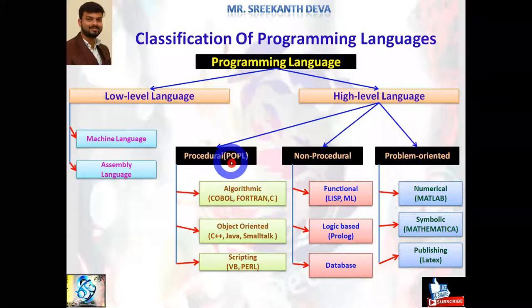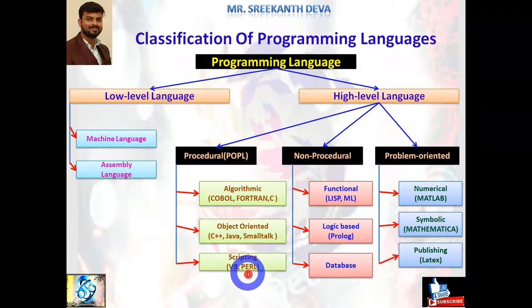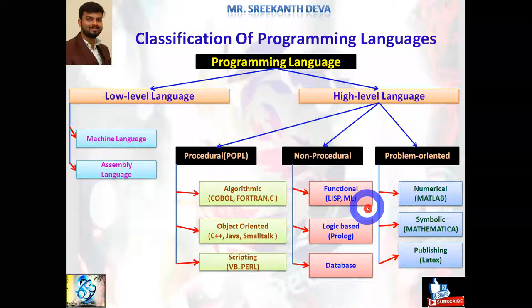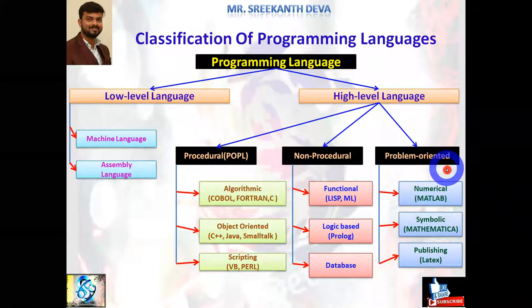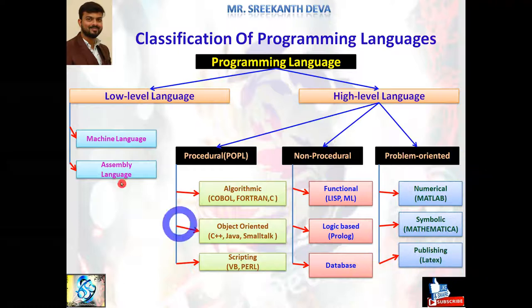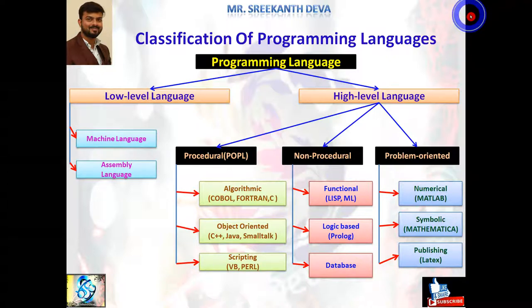Procedural oriented programming language is further categorized into algorithmic, object oriented, and scripting languages. Non-procedural languages include functional language, logic-based language, and database languages. Problem-oriented languages include numerical, symbolical, and publishing types. These are the various types of programming languages used in the real world environment.